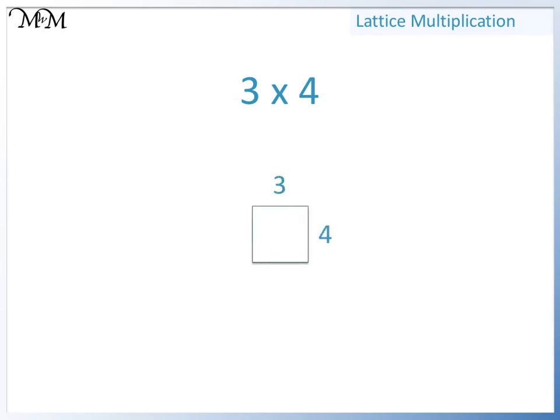We then draw a line diagonally from one corner to the opposite corner. When we multiply 3 by 4, we will write the units, or ones, of the answer here, and the tens of the answer here.